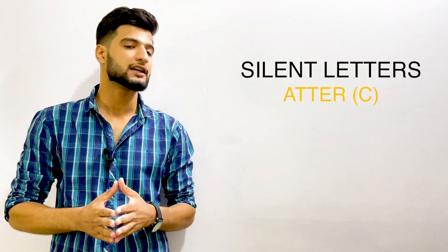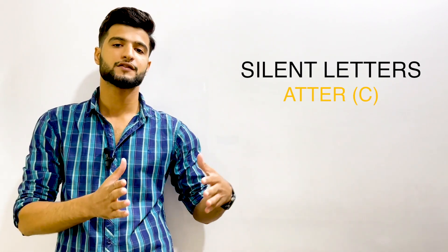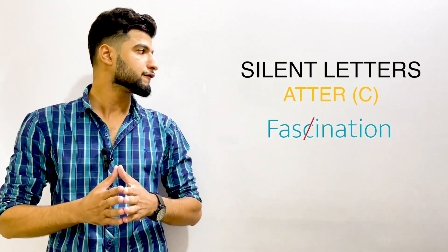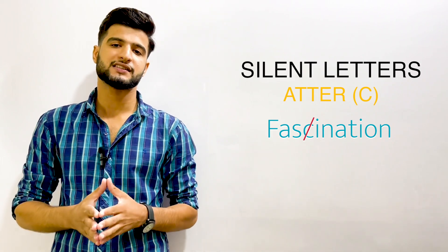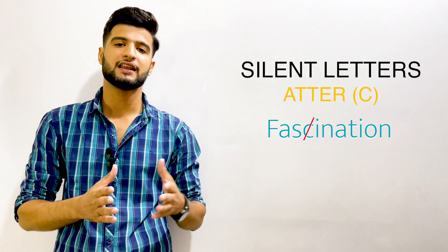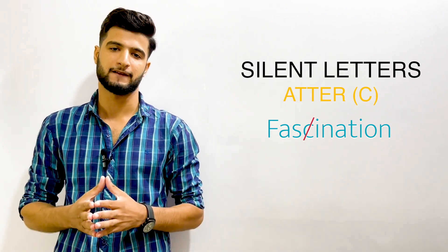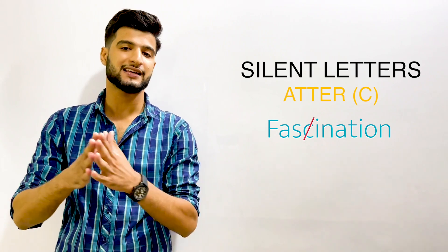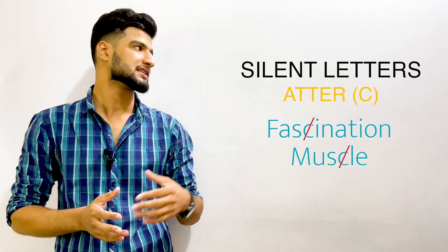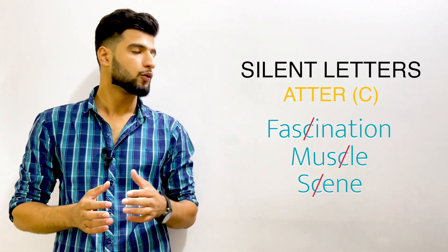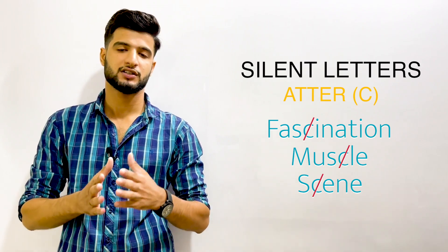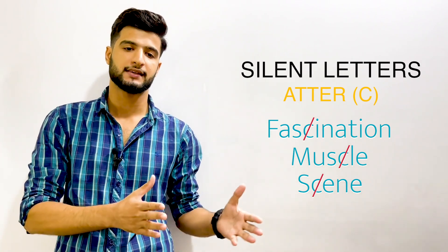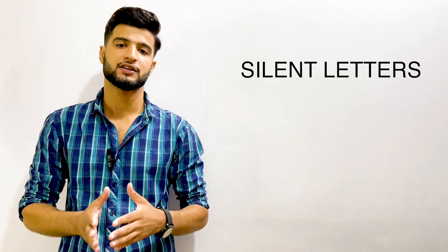Moving ahead to the letter C. The letter C is usually silent when it comes after S. For example, 'fascinating' — we don't say 'fascinat-ing' with a hard C, we say 'fascinating.' Fascinating means something that is interesting. Other examples include 'muscle' and 'scene,' where C is also silent because it is after S.